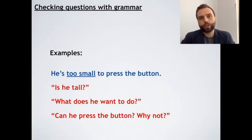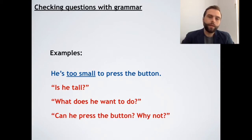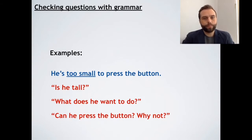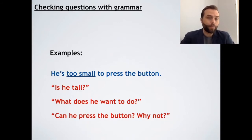Here's another example. The sentence is: 'He's too small to press the button.' Here are the checking questions. 'Is he tall?' — No, he's not tall. 'What does he want to do?' — He wants to press the button. 'Can he press the button?' — No. Why not? He's too small. This example could also involve some drawings — visual checking with pictures. But these are the examples of checking questions you might use.